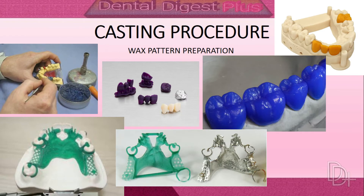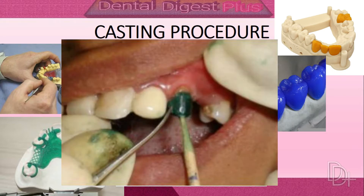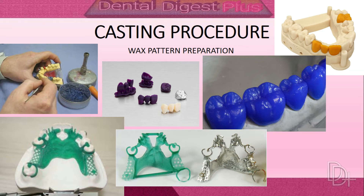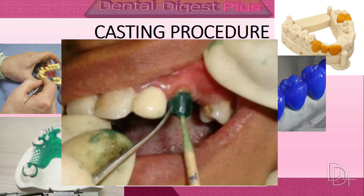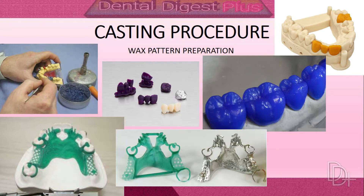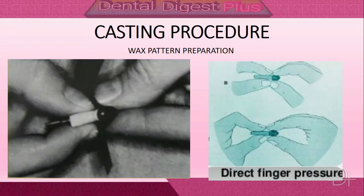The fourth step is wax pattern preparation. It is the contouring of the wax pattern into the desired shape and form. The wax pattern can be prepared directly inside the prepared tooth — called the direct wax technique — or on the cast prepared from the impression of the tooth — called the indirect wax technique. Type 1 inlay wax is used for the direct technique and type 2 for the indirect technique.